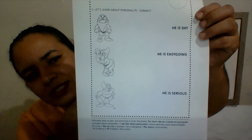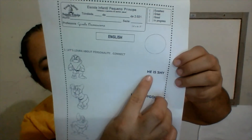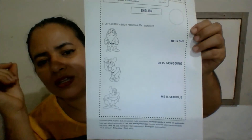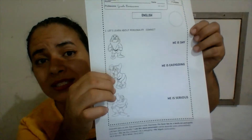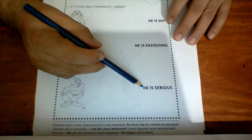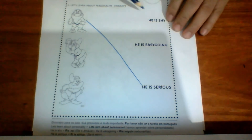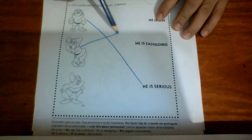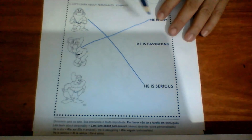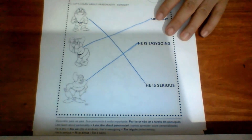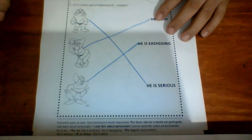But now we have to connect. Look at that — you have here: he's shy, he's easygoing, and he's serious. So we have three examples here. Let's connect: he's serious, he's shy, and he's easygoing. Now let's paint.